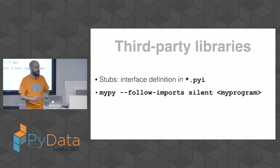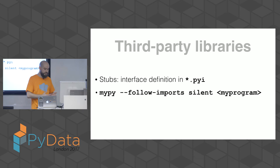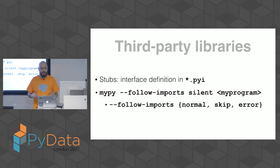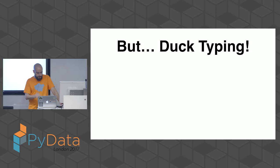Another option is to ignore third-party libraries — sometimes that's the way to go in a gradual typing process. You follow the imports but silence the errors. There are probably 50-plus options for mypy, so you can choose how to handle errors.